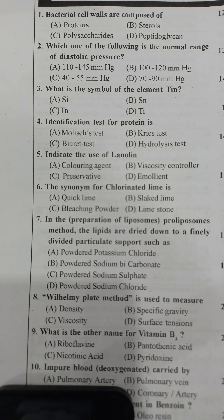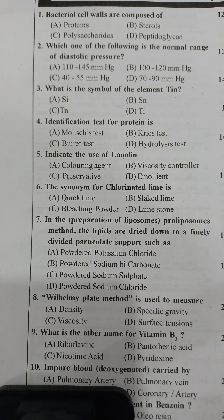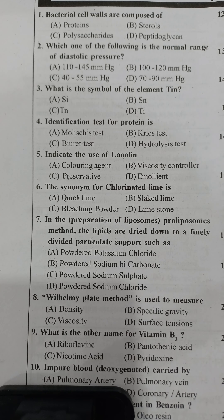Next: the identification test for protein — options are Molisch test, crease test, biuret test, and hydrolysis test. The right answer is option C, the biuret test. It is used to identify the presence of protein; biuret reagent is a blue solution that, when it reacts with protein, changes color to pink-purple.